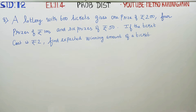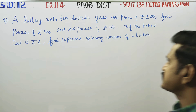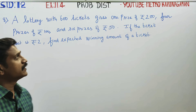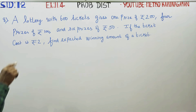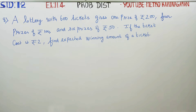Dear 12th standard students, in exercise number 11.4, sum number 8: a lottery with 600 tickets gives 1 prize of Rs.200, 4 prizes of Rs.100, and 6 prizes of Rs.50. If the ticket cost is Rs.2, find the expected winning amount of a ticket.